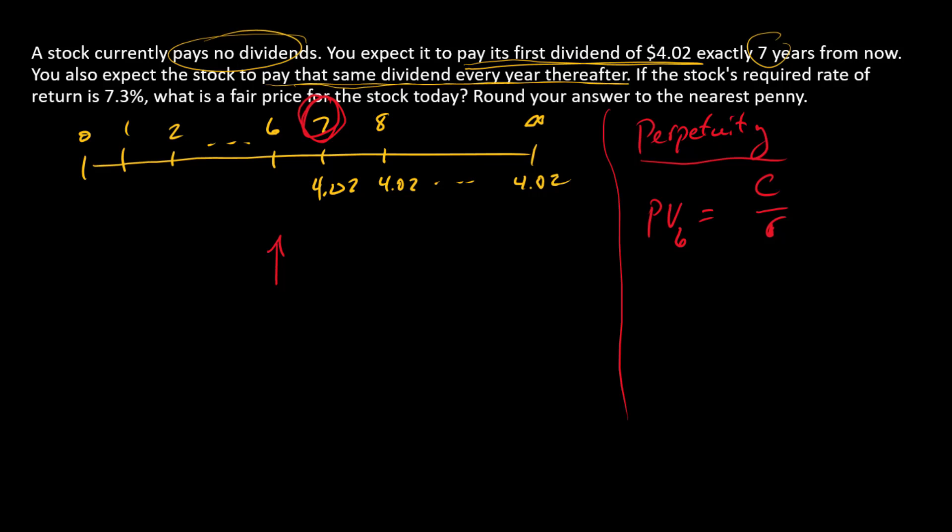Let's go ahead and do that first calculation. We can say that the price at time six is going to equal $4.02 divided by 0.073, and that price is $55.0685 with some extra decimals to eliminate rounding problems.